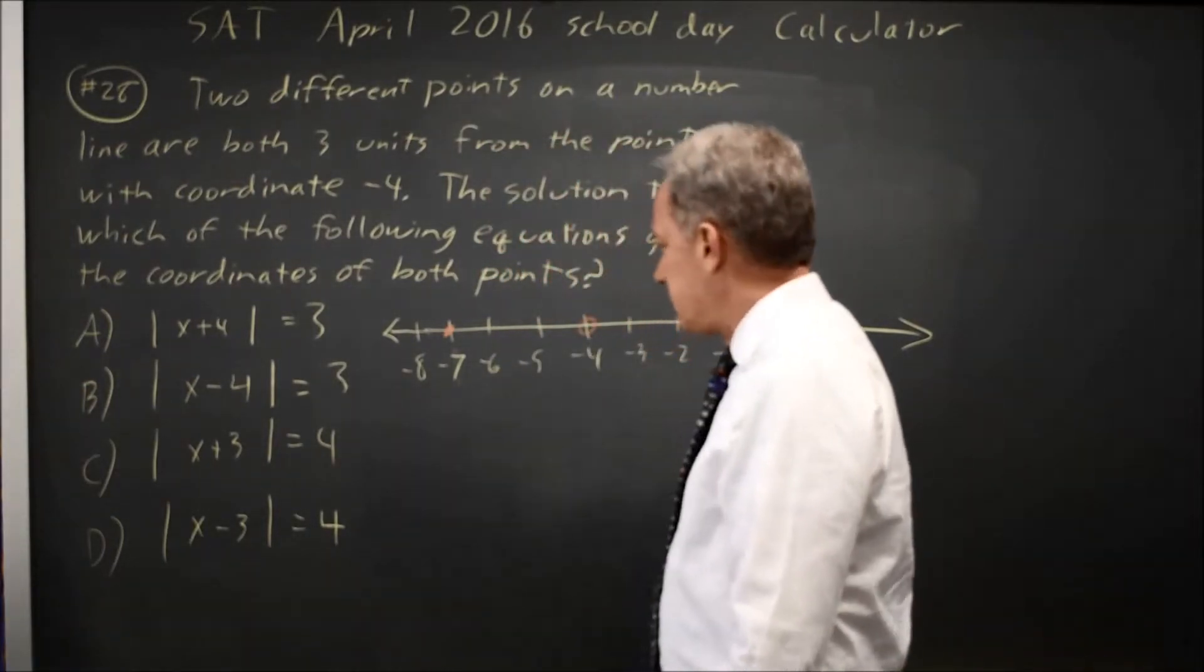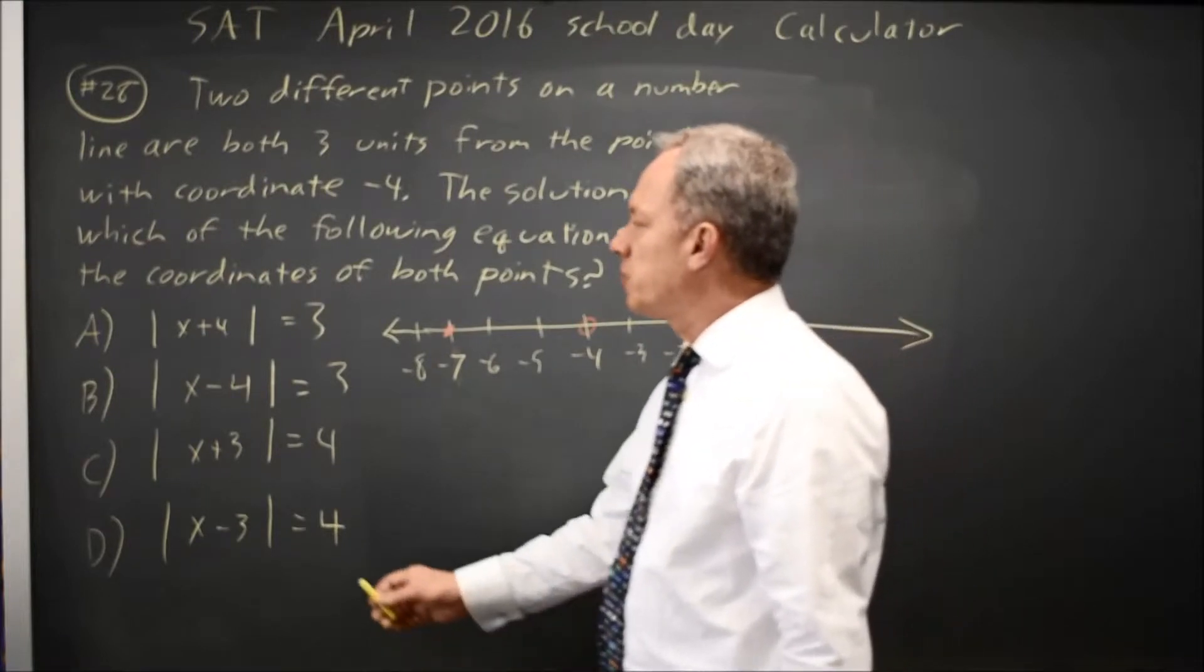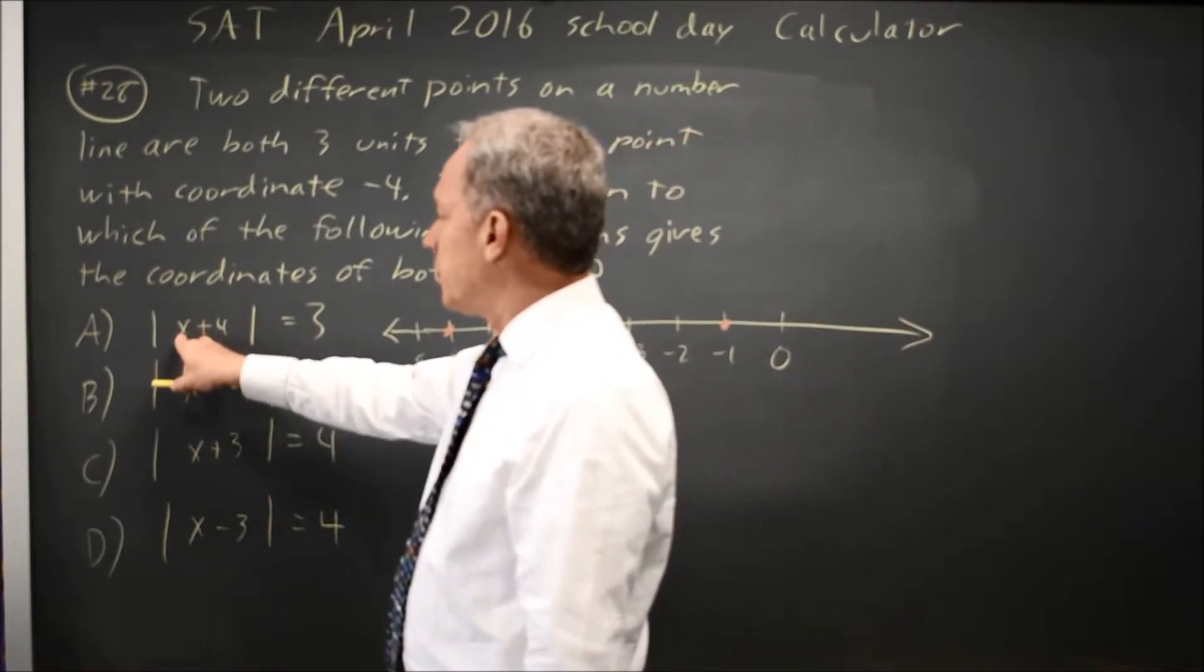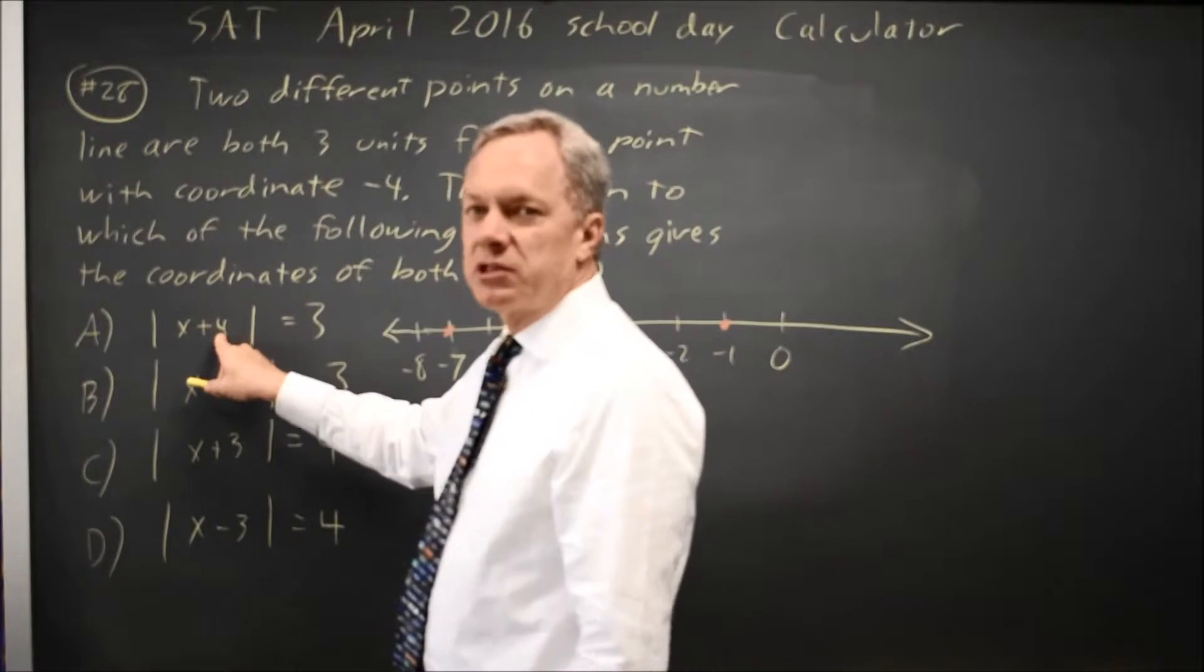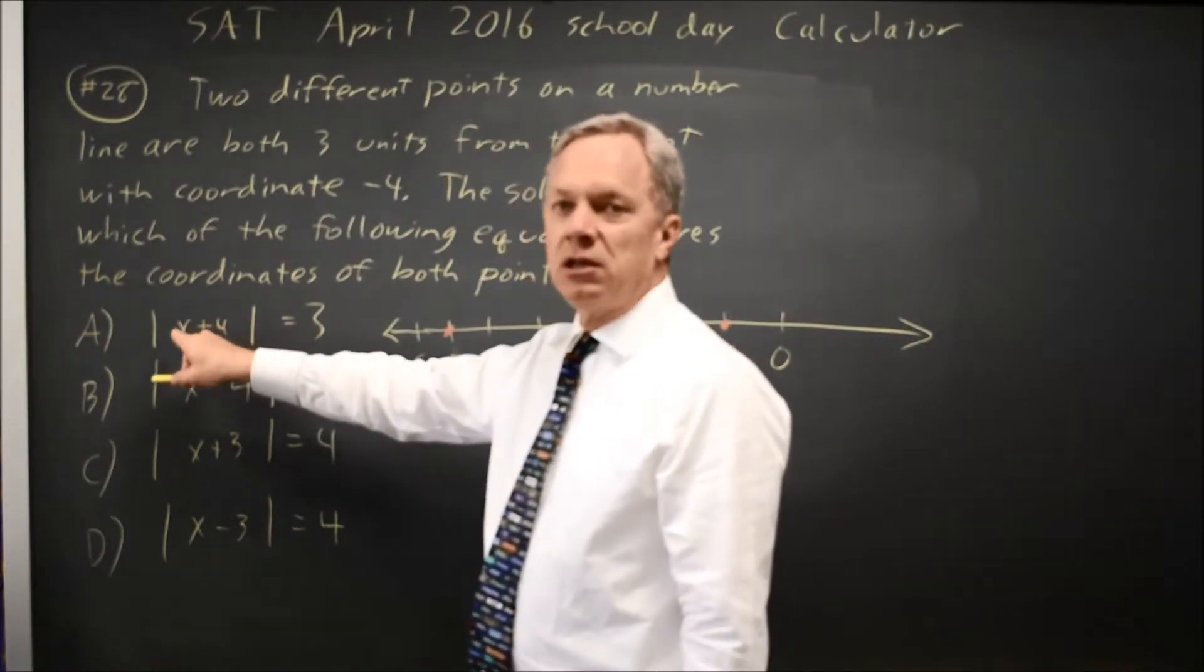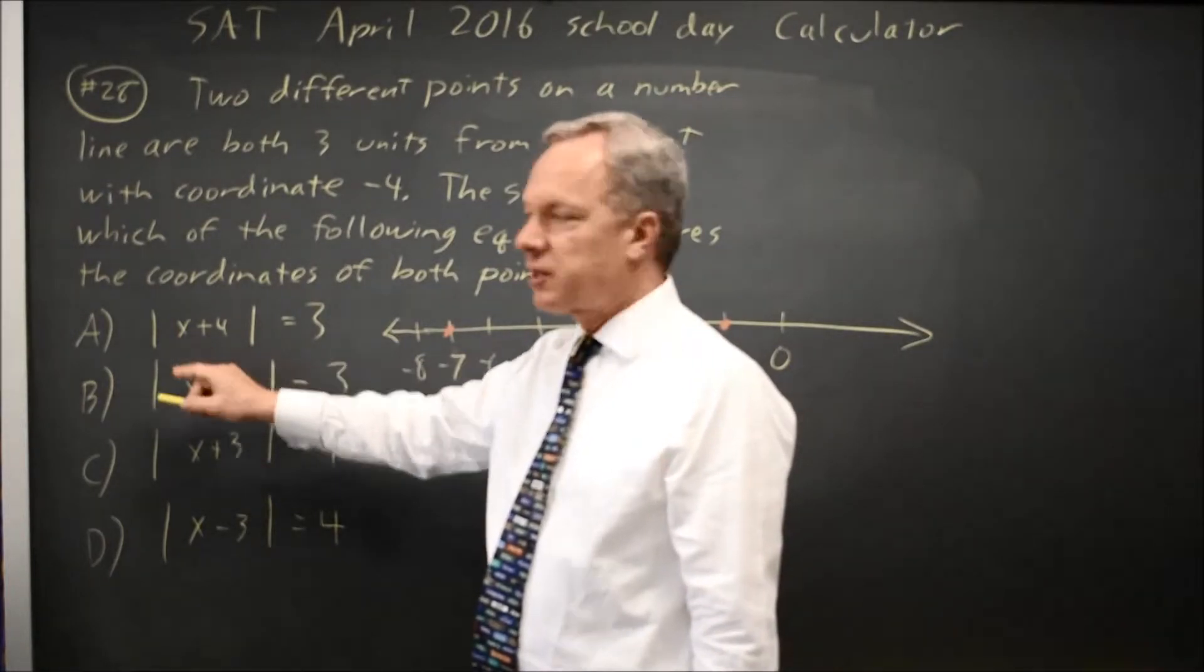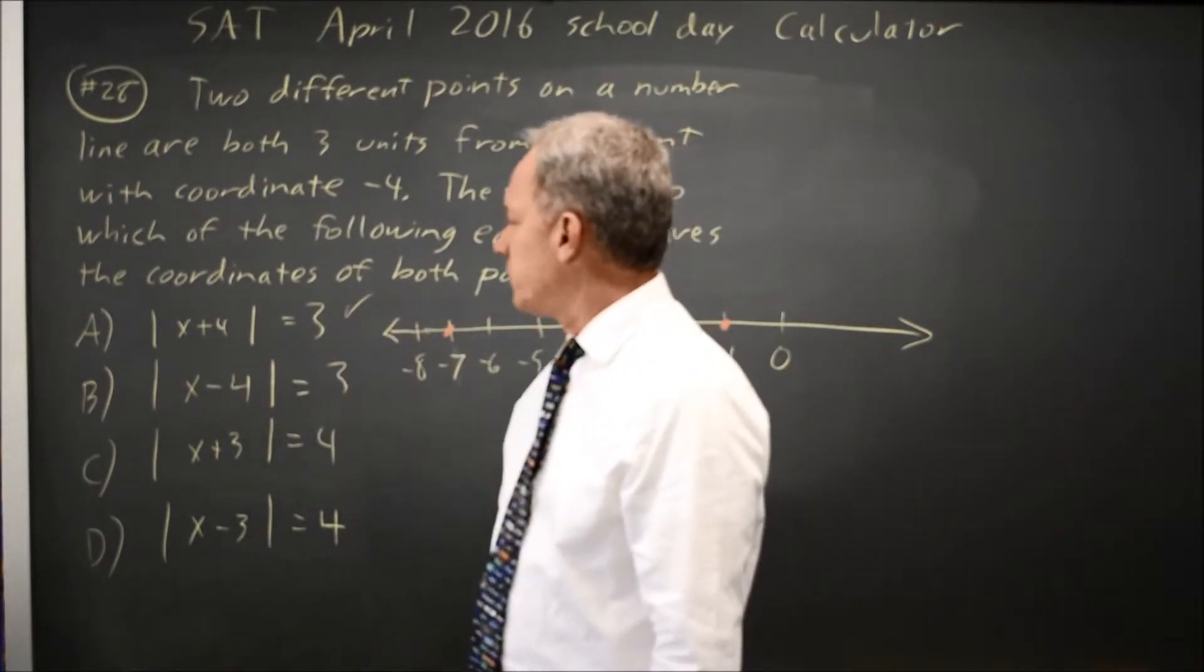And we want one of these where negative 7 and negative 1 both make the equation true. So negative 7 plus 4 is negative 3, absolute value is positive 3, so that works. Negative 1 plus 4 is positive 3, absolute value is still 3, so that also works. So it looks like A would be the correct answer.